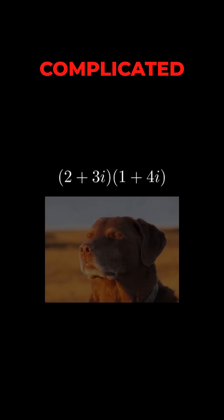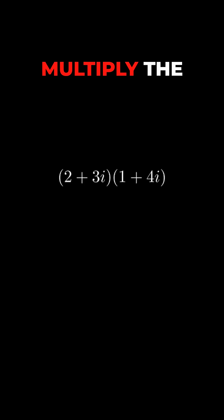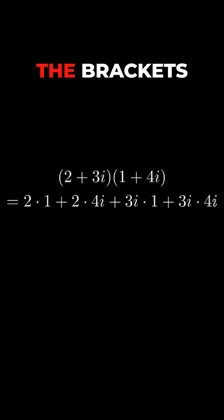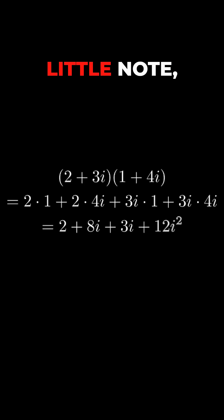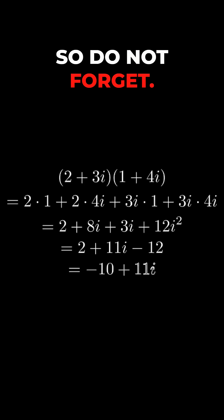Multiplication is a little bit more complicated though, as we need to correctly multiply the numbers while they are in the brackets one with each other. Little note, in the end you will get 4 different terms. But there is a thing you need to pay close attention. i squared is equal to minus 1, so do not forget.